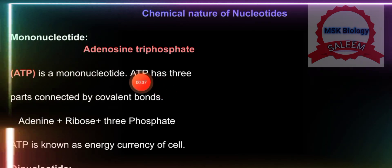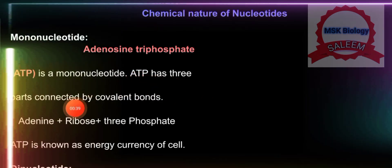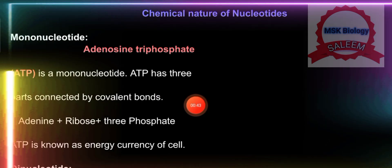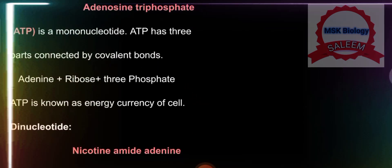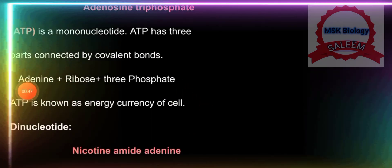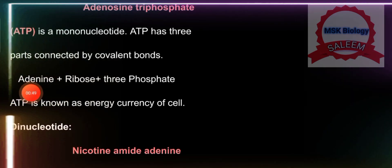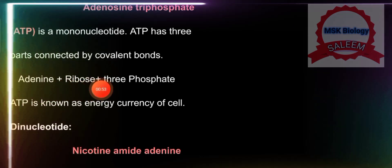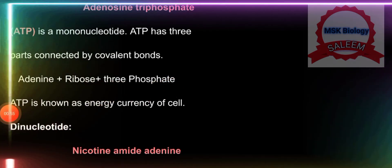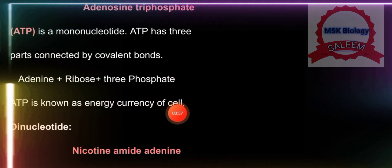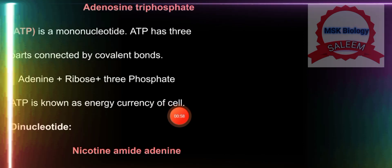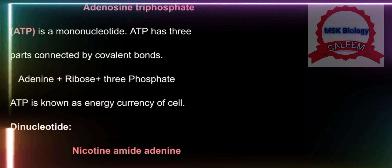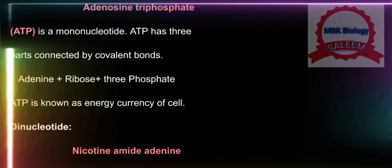Adenosine triphosphate has three parts connected by covalent bonds: adenine, which is a nitrogenous base; ribose, which is a sugar; and three phosphate groups. ATP is known as the energy currency of the cell. Joh bhi activities cell ke andar hoti hain, wo ATP ki presence mein perform hoti hain.